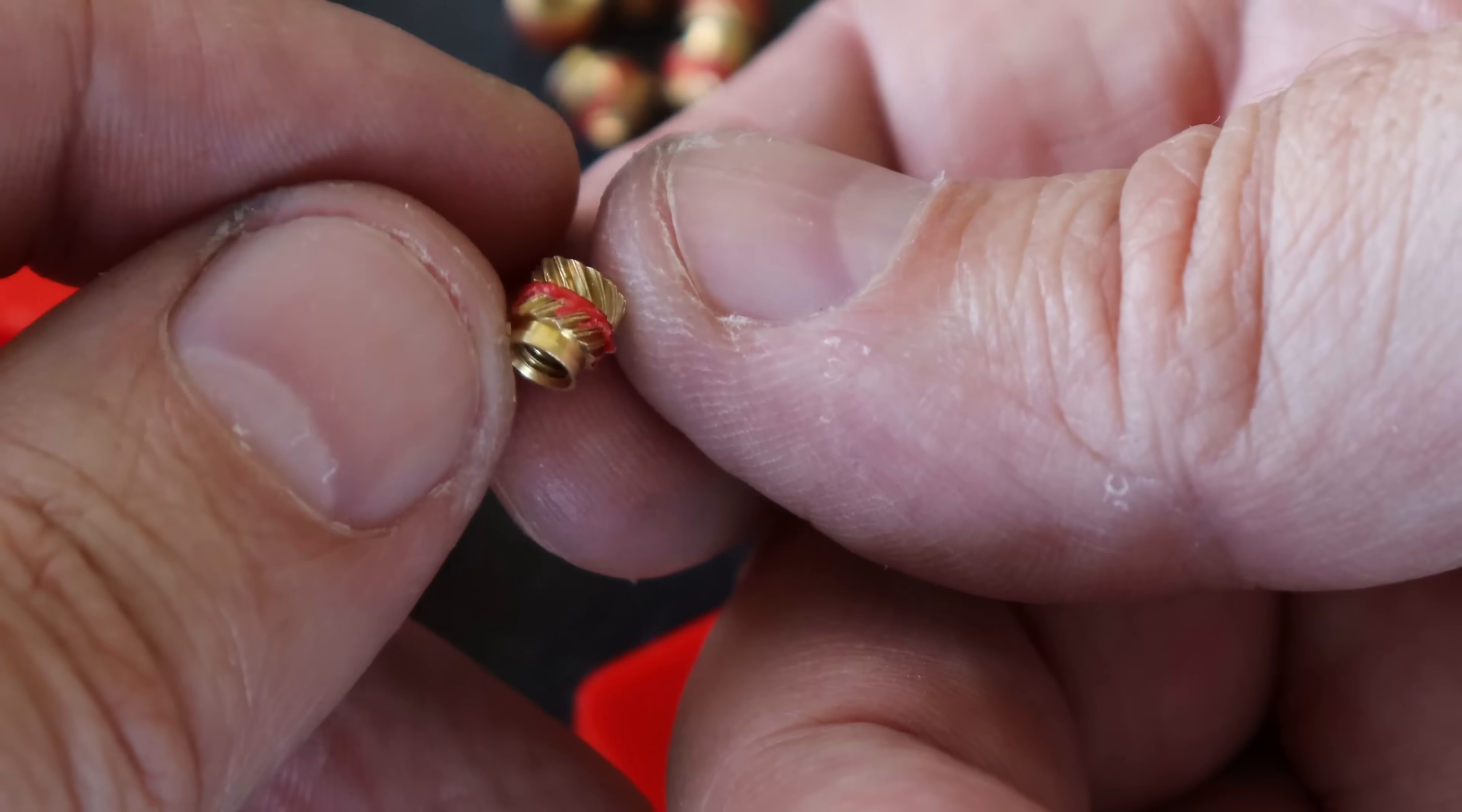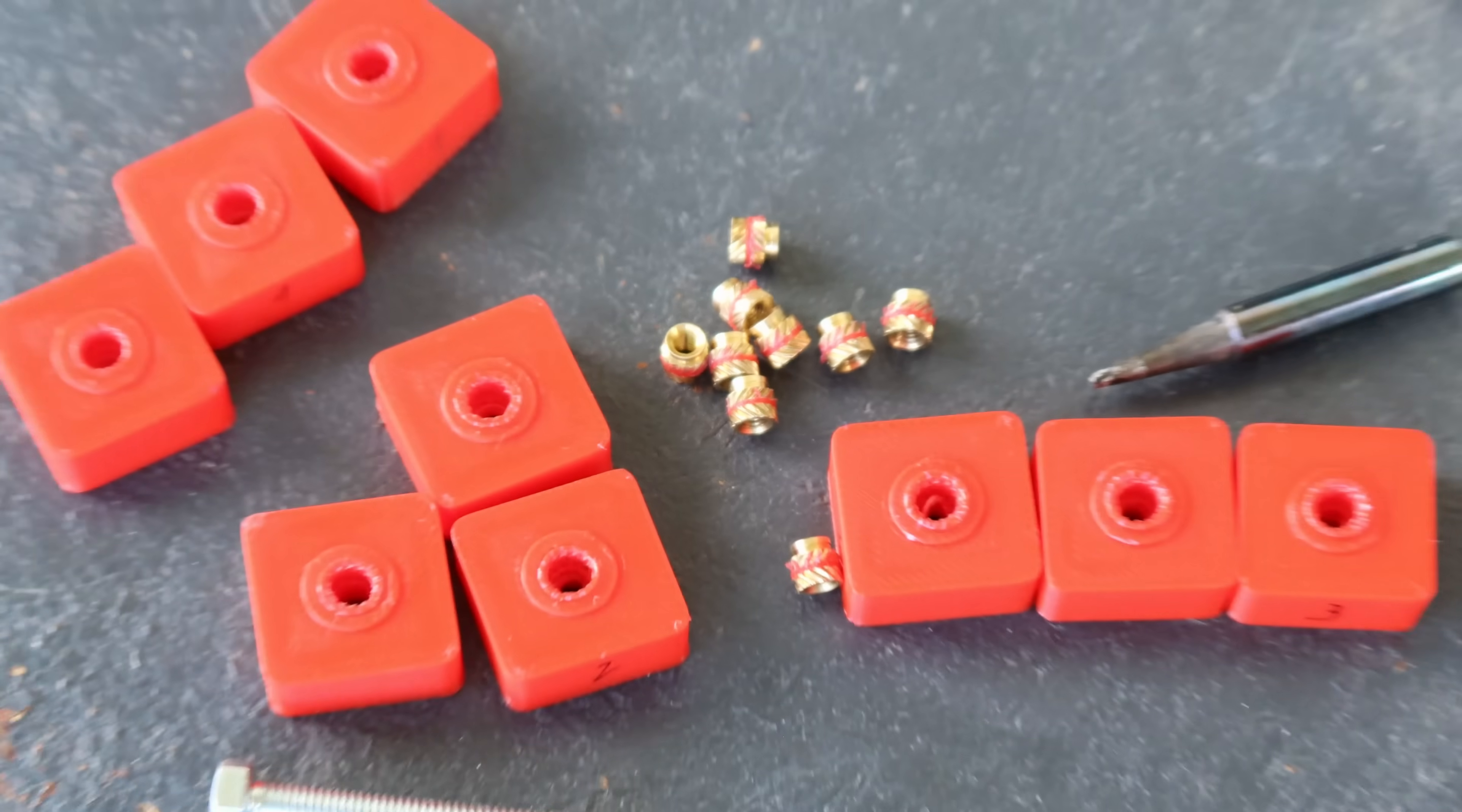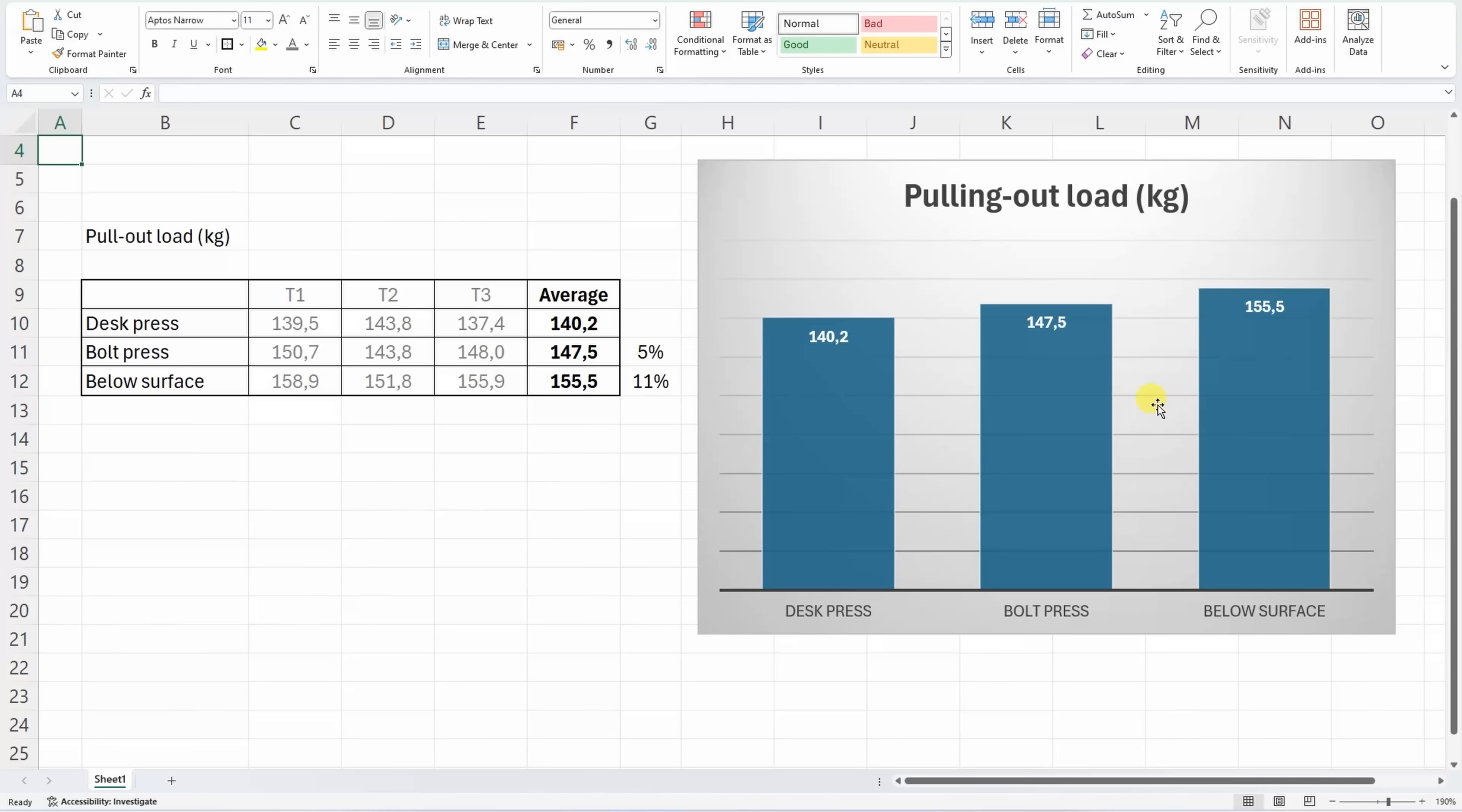We can analyze the results to see which method is the strongest. We can watch the percentage or analyze the graph. But actually for me the real conclusion from this is that all three methods are very strong. I mean 140-150 kilograms pulling out load, that's incredibly strong for M3 bolt.